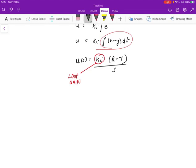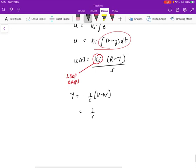Now, to solve this, we need to do a little bit of algebra. We remember that Y is going to be 1/S, that's G over here, times (U minus W). And we substitute for U over here, which gives us Y as 1/S times [KI(R minus Y)/S minus W].